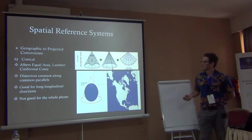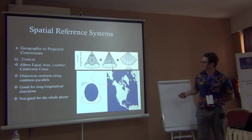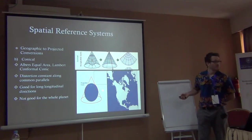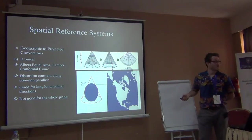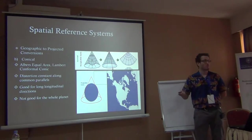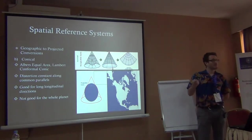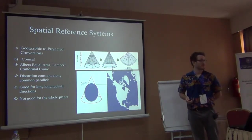Conical projections are really good if you want to calculate distance along a certain parallel, because they preserve those distances. However, they will change areas or shapes. So if you're interested in calculating distances over large areas of the globe, you could consider a conical projection.